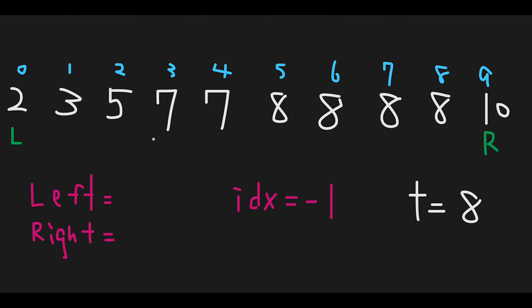Let me explain with this example. The blue numbers are index numbers, white numbers are the input array, and the target is 8. To solve this question, it's hard to find both sides of the target number at the same time, so we need to execute binary search twice — for the left side and the right side.